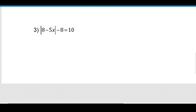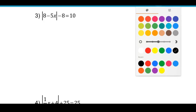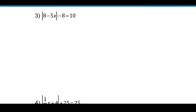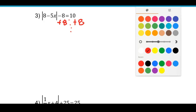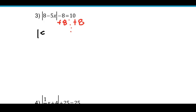Let's try the next one. So the same first step, we do need to get the absolute value quantity by itself. So we're going to add 8 to both sides of this equal sign. Then on the left side, all that's left is our absolute value quantity: 8 minus 5x inside the absolute value equals 18 on the right side. So we do need to split into our two cases here.